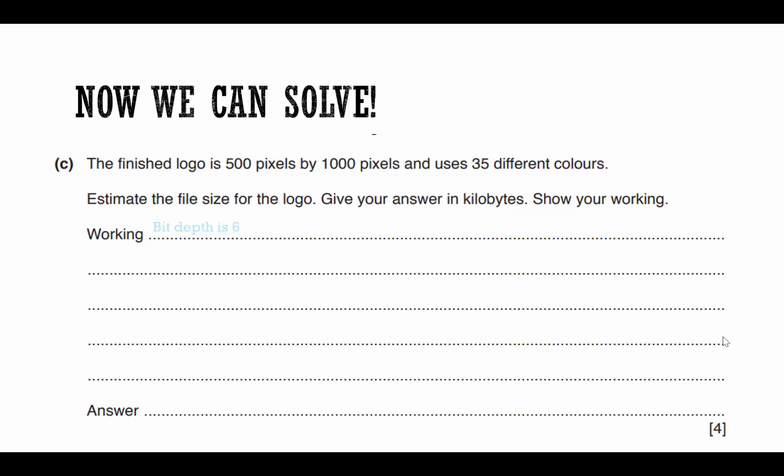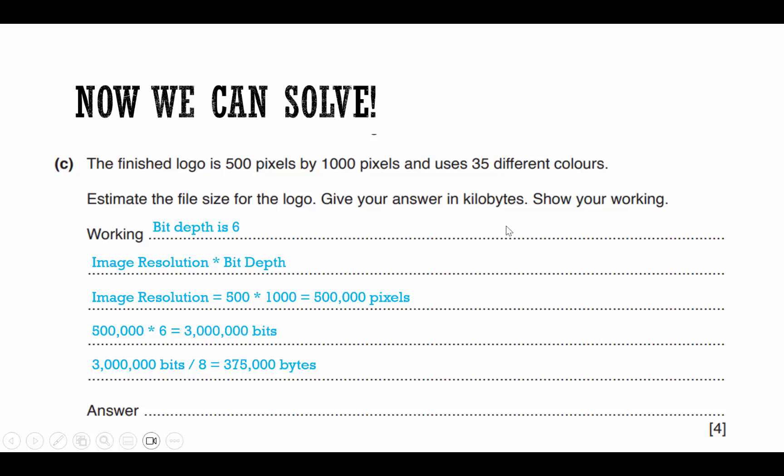So now that I know that, I can answer this question. So I know my bit depth is 6. I know my formula is image resolution times bit depth. So I'm going to do 500 times 1,000. It gives me 500,000 pixels. All I need to do is multiply it by 6. That gives me 3 million bits. Well, I need to go from bits to bytes and then bytes to kilobytes. So 3 million bits divided by 8 gives me 375,000 bytes. It wants the answer in kilobytes though. So I'm going to divide that by 1,000. And my answer is 375 kilobytes.